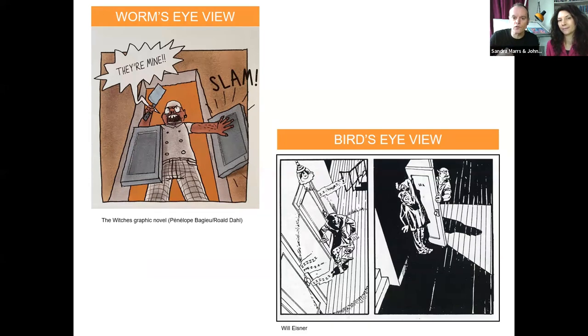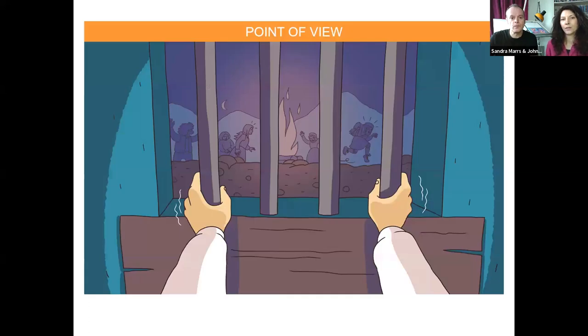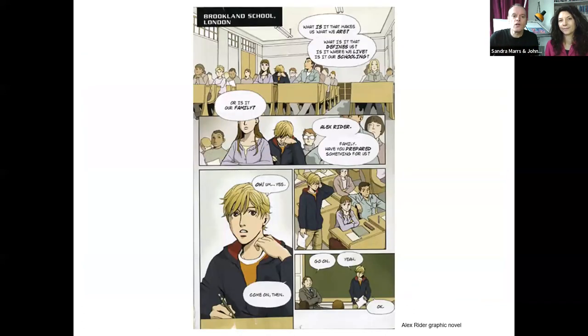You can also have different types of points of view, much like in traditional prose. For example, here in Freya, we've got the scene depicted from the point of view of the main character. We see the prison bars, we also see that Freya's hands are trembling, so it encourages empathy and sympathy and thoughts about what it's like to be someone else.